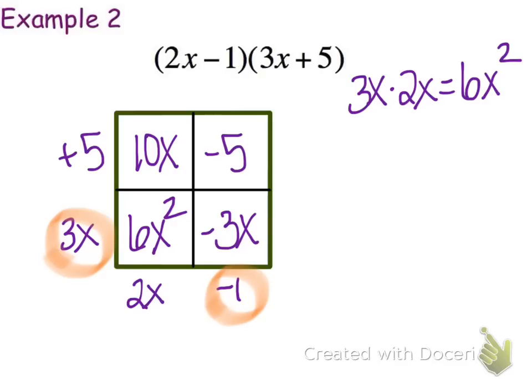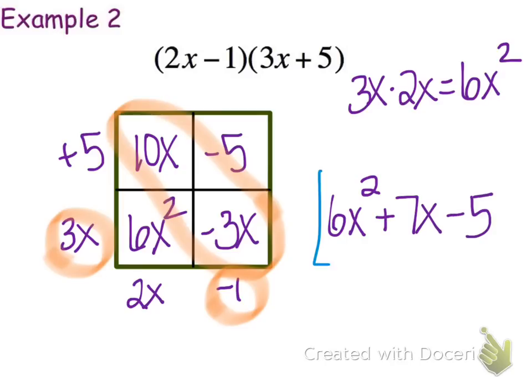Remember the final step then would be to total up what we have. We've got 6x squared. On the diagonal I've got 10x's and negative 3x's. That adds up to be 7x's. And then we've got a minus 5. And there's our final answer written as a sum.